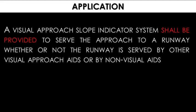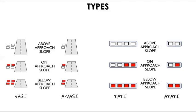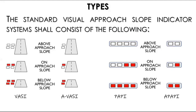A visual glide slope indicator system shall be provided to serve the approach to a runway. The standard visual glide slope indicator system shall consist of any one of the following: VASI — Visual Approach Slope Indicator, or PAPI — Precision Approach Path Indicator.